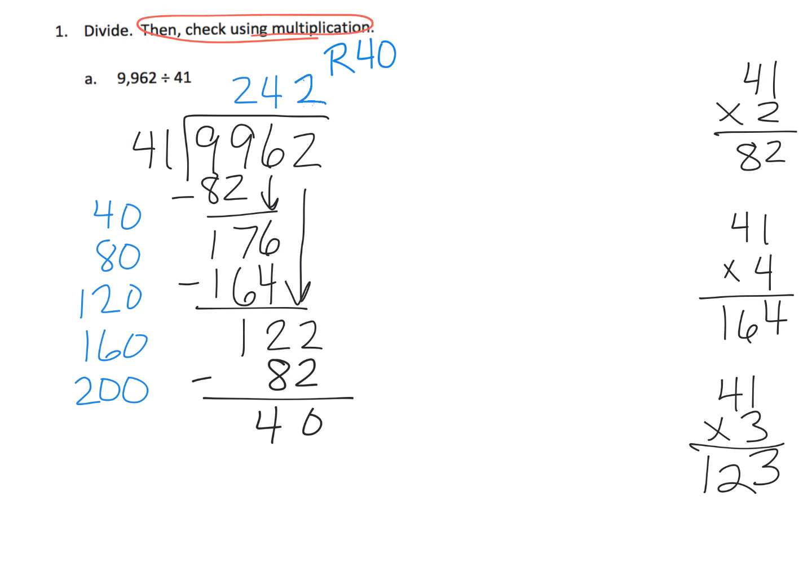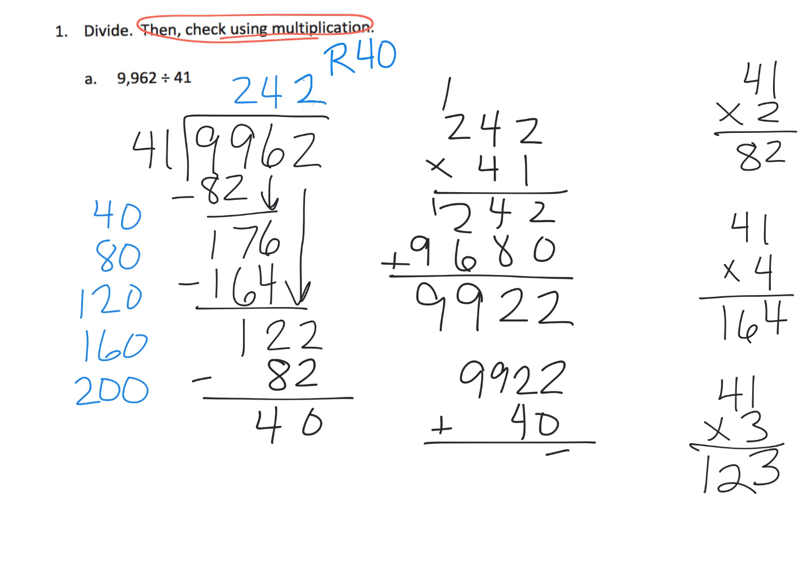Now we've got to check using multiplication. So what we're going to do is we're going to do 242 multiply by 41. 4 times 2 is 8, 4 times 4 is 16, carry the 1, 4 times 2 is 8 plus 1 is 9. So I add those together, I get 9,922. But now I need to add in the remainder, and when I do that I get 9,962, which is exactly what we started with. So that tells me that our answer of 242 remainder 40 is probably correct.